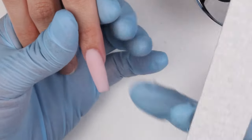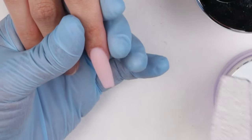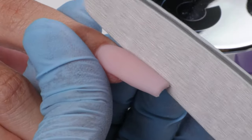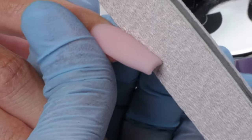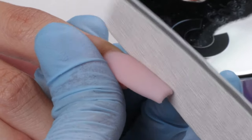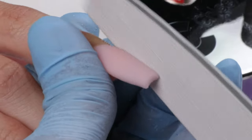First thing, how you hold your file to do the shape is very important. A lot of you guys do a lot of moving. What I like to do is just one direction. And I file from the outside until the connection of the tip and the nail. That's where you're going to stop.